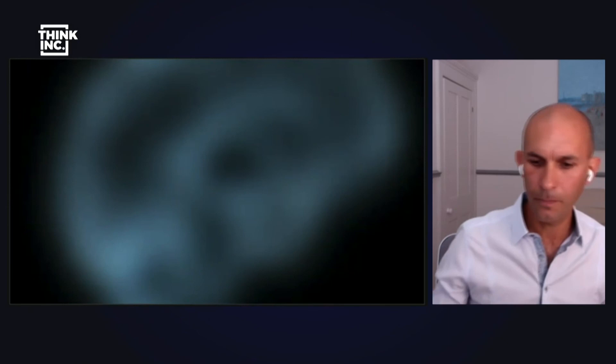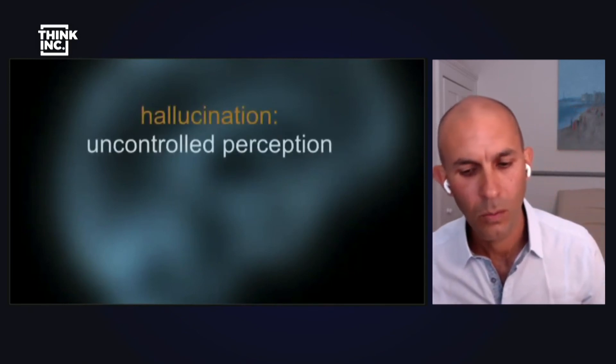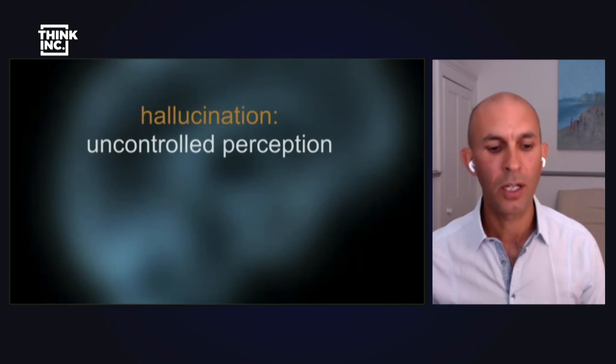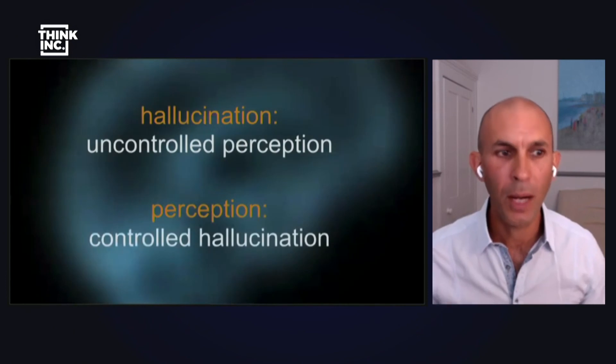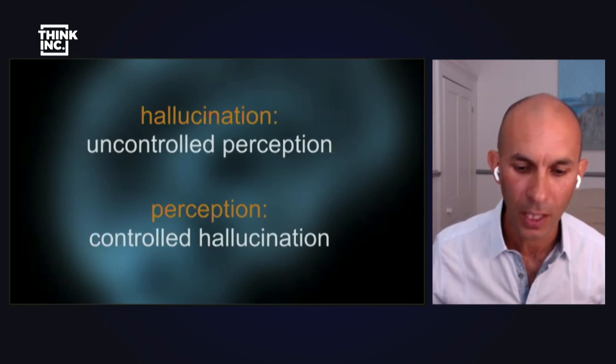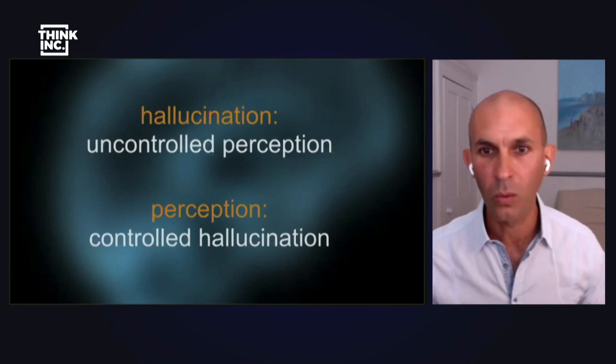Let's think about this for a moment. If hallucinations are a kind of uncontrolled perception, well then normal perception right here and right now is also a kind of hallucination, but a controlled hallucination in which the brain's predictions are continually reined in by sensory signals coming from the world. In fact, you could say that we're hallucinating all the time. It's just that whenever we agree about our hallucinations, that's what we call reality.